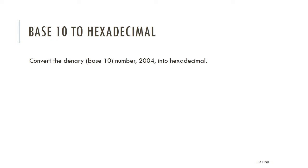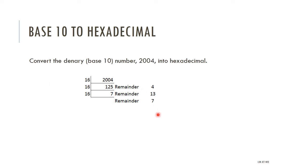The next slides will go through the steps. What should we do? We will divide, but we do not want a decimal result — we want to look at the remainder. Take your base 10 number, 2004, and divide by 16. Why 16? Because hexadecimal is base 16.